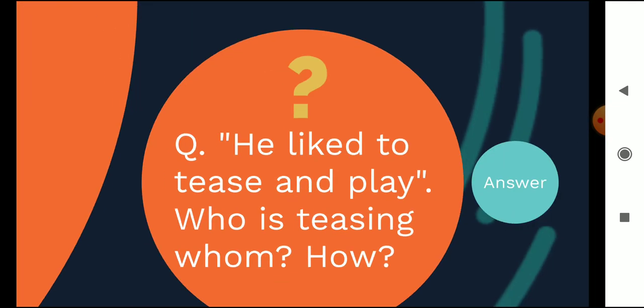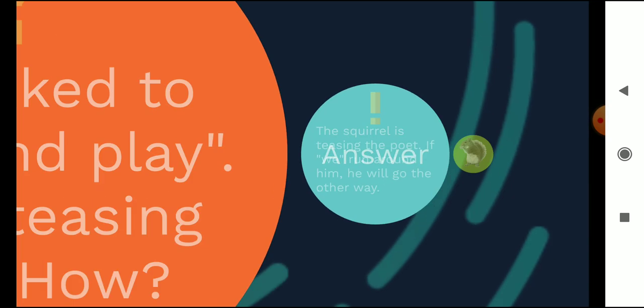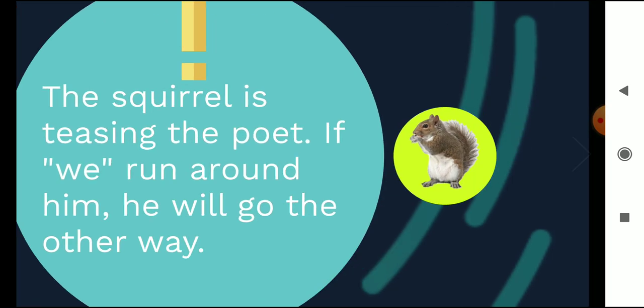This is the third question. He liked to play. He liked to tease and play. Who is teasing whom and how? The squirrel is teasing the poet and if we run around him, he will go the other way. So here are the questions. I've discussed three questions with you and I'm wrapping up the session. Thank you.